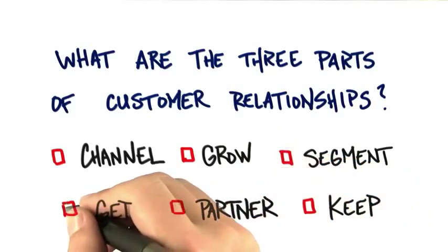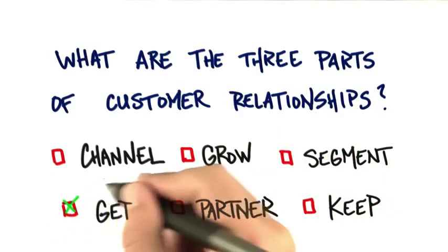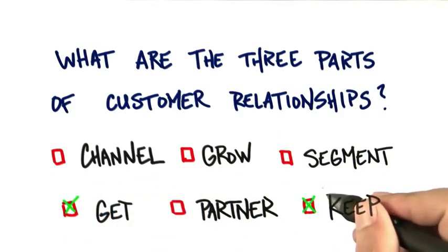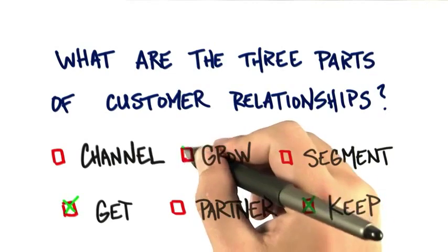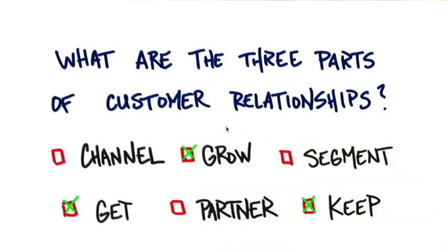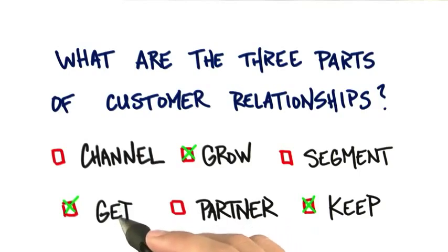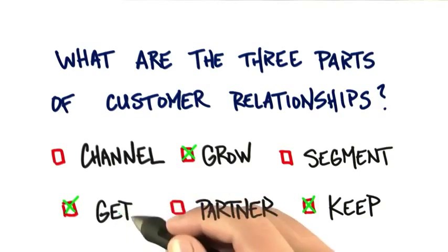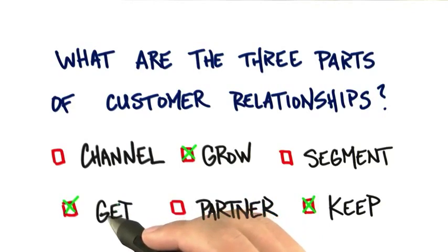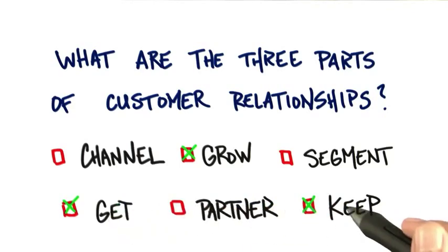The answers are get, keep, and grow — the three parts of customer relationships. Customer relationships start with get. Get is how you actually acquire customers and get them to purchase your product.